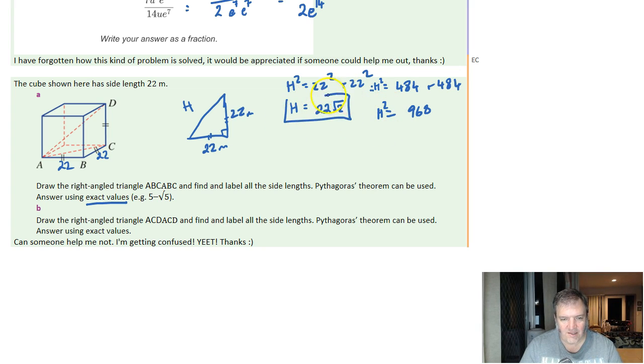I just jumped to the answer there because this is actually just a multiple of your best friend's little buddy, which is 1, 1, and root 2. That's how I knew to get to the answer so quickly because that's an isosceles right-angled triangle. But let's finish it off anyway.